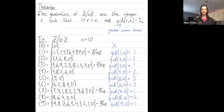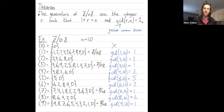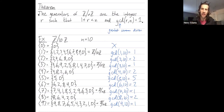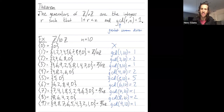Alright, I hope you enjoyed this example explaining this theorem, which tells us what the generators of ℤ mod nℤ are: they're all the elements from 1 up to n minus 1 that are relatively prime to n, or in other words, have no common divisors besides 1. Thanks.